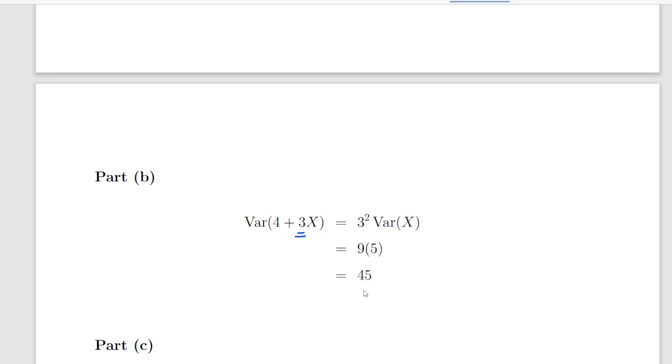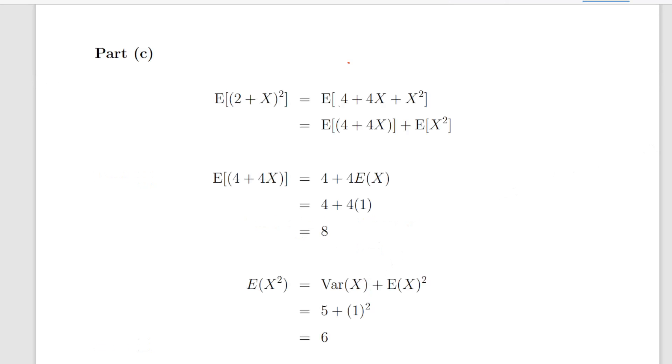Finally, part c: calculate the expected value of 2 plus X to be squared. That is equal to the expected value of 4 plus 4X plus X squared. We break it up into two chunks: the expected value of 4 plus 4X and X squared.